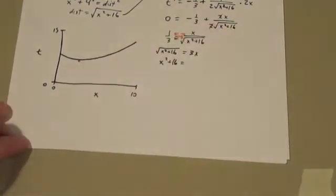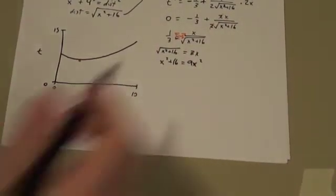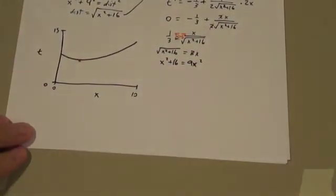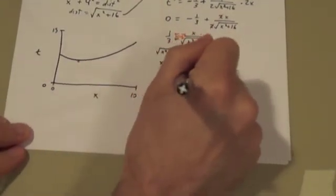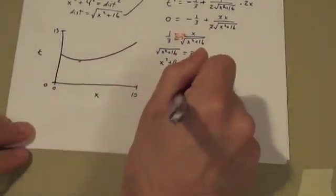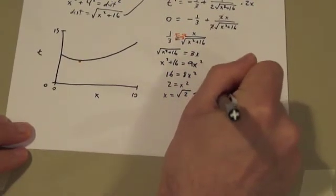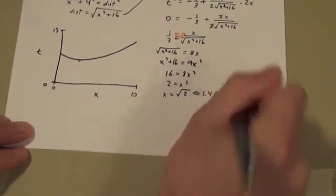And at this point we have no choice but to square both sides to get rid of the square root. That might introduce extraneous roots, but that's okay. We'll check them at the end. Squaring the 3x gives us 9x squared. Don't forget to square the 3. So now we've got this, and we're going to subtract x squared from both sides to get 16 equals 8x squared. Divide by 8 to get 2 equals x squared, and take the square root to get x equals the square root of 2, which is about 1.414 feet.